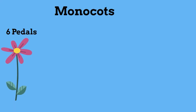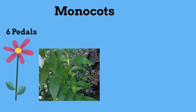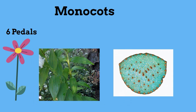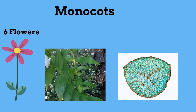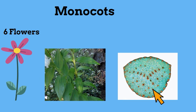The flowers of monocots usually have 3 petals or a multiple of 3 petals. They have long slender leaves with veins that run parallel. If you look at the vascular tissue in monocots, you will see that they are spread out randomly throughout the stem.